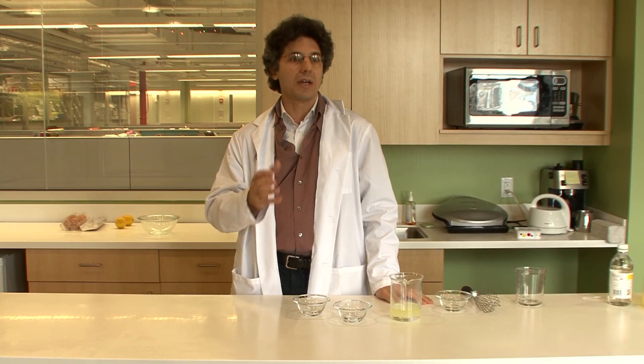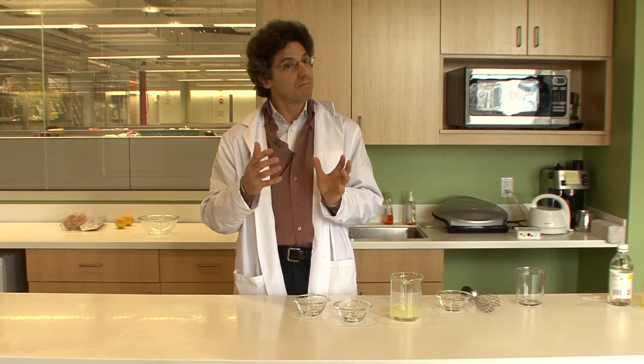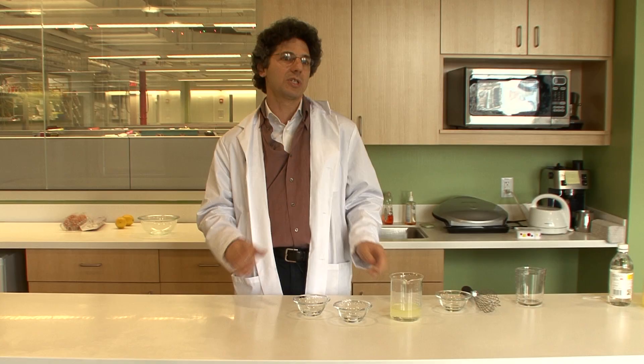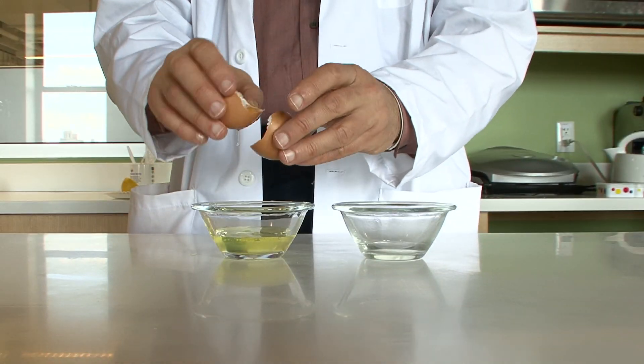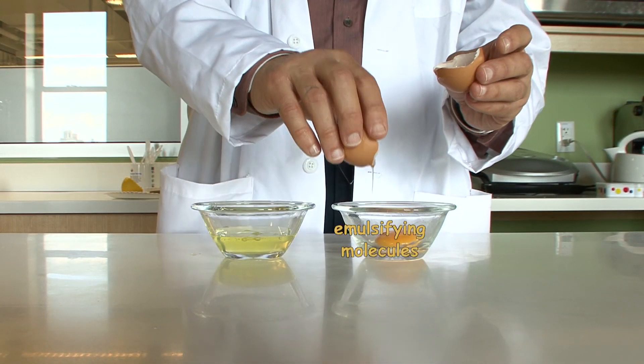We can provide a coating around the oil droplets to prevent them from meeting each other, from bumping into each other, from associating and forming larger and larger oil droplets, and finally separating out into two different phases. And the way we're going to provide that coating is we're actually going to use molecules that come from egg yolks. These are called emulsifying molecules. Specifically, a substance called lecithin.